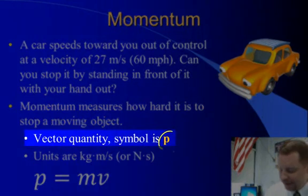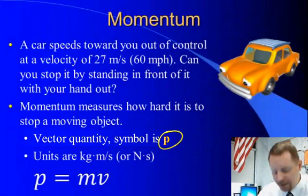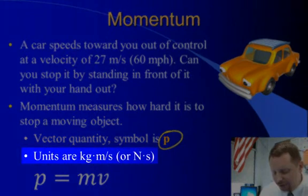It is a vector quantity, its symbol is p, and the units are kilograms times meters per second, which is the same thing as a newton times a second.